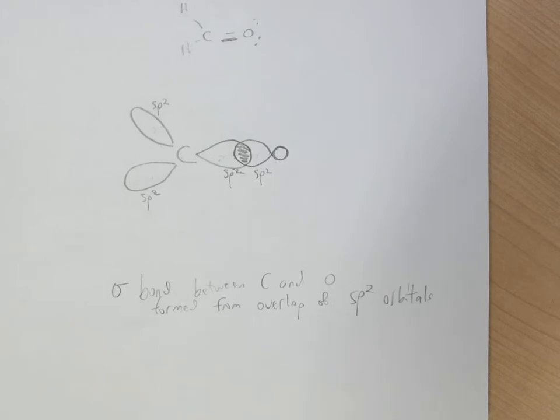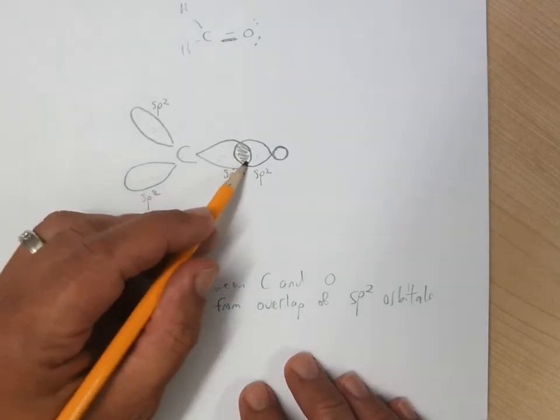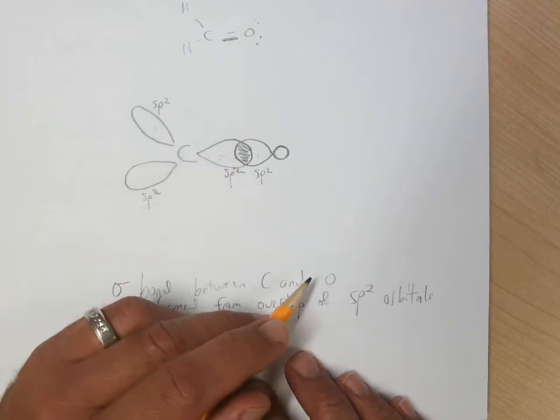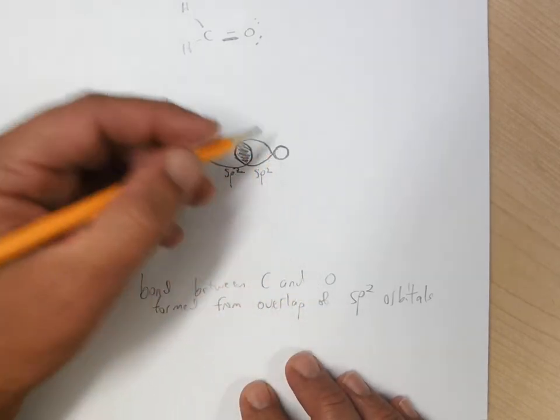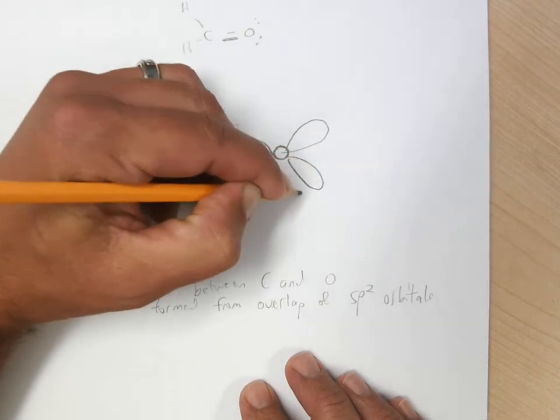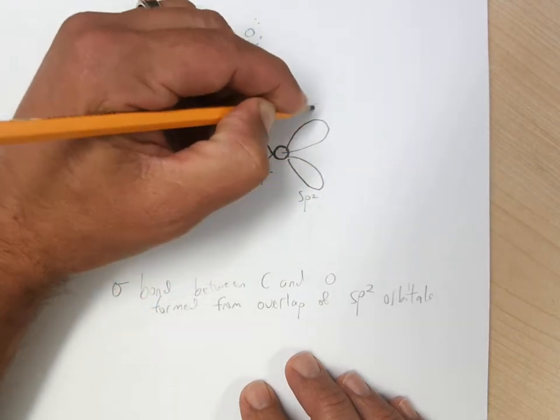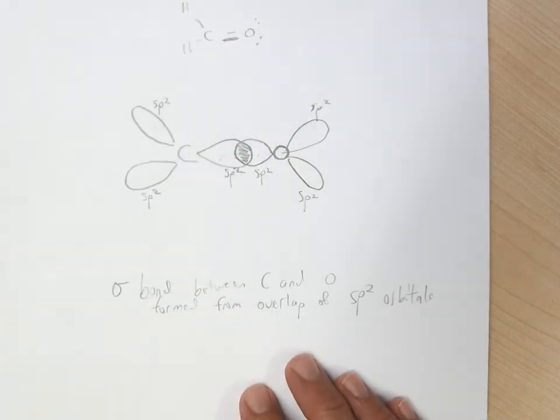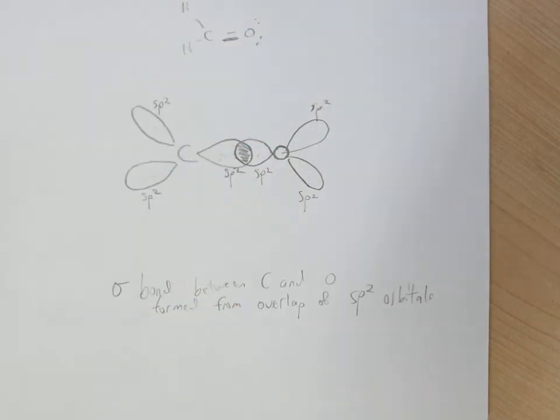And I might say SP2 hybrid orbitals, but all SP2 orbitals are hybrid, so that would be sort of redundant. But there's the first bond that we got in place. And this oxygen also has two SP2 hybrid orbitals,